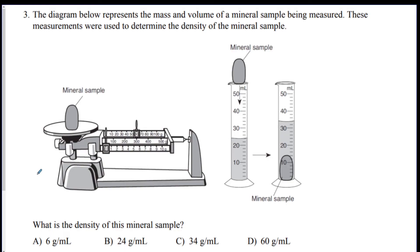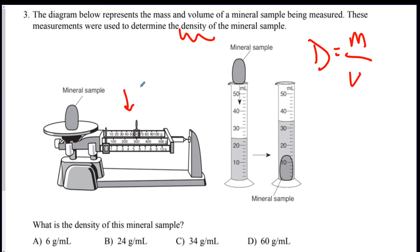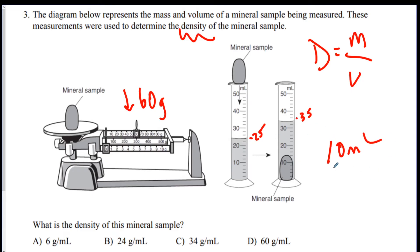Number three: the diagram below represents mass and volume of a mineral sample, and these measurements were used to determine the density of the mineral. What is the density? The formula is on the front of your reference table: density equals mass divided by volume. The triple-beam balance reads 60 grams. They used the water displacement method — it started at 25 mL and went up to 35 mL, a difference of 10 mL. So 60 grams divided by 10 mL gives you A — 6 grams per milliliter.